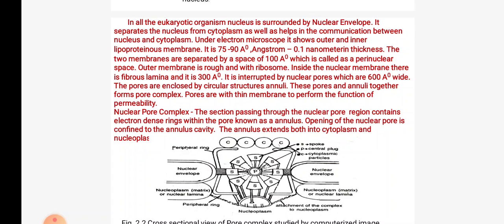The outer membrane is rough with ribosomes. Inside the nuclear membrane there is a fibrous lamina of 300 angstrom. It is interrupted by nuclear pores which are 600 angstrom. The pores are enclosed by circular structures known as annulite. These pores and annulite together form the pore complex.